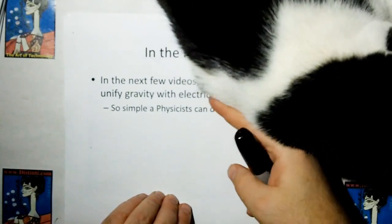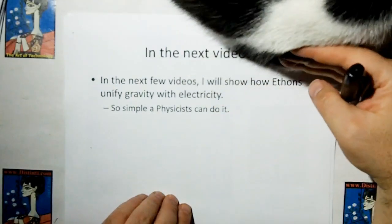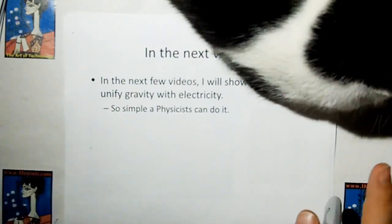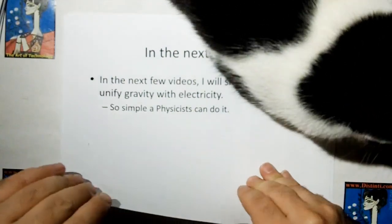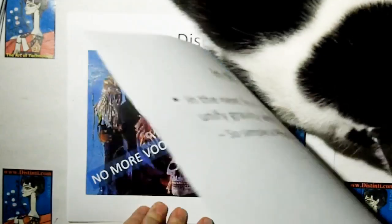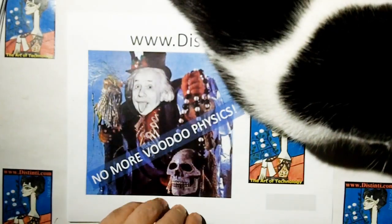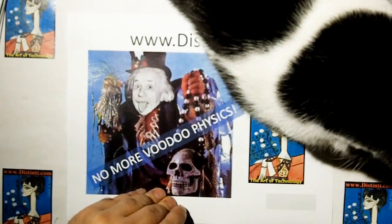So, in the next videos, once I get my cat out of the way, I'll show you how ethons unify gravity with electricity in the next videos. It's so simple that a physicist can do it. No more voodoo physics. Please subscribe if you can, give me thumbs up, and get the word out. Thank you. Thank you, Mr. Flip.